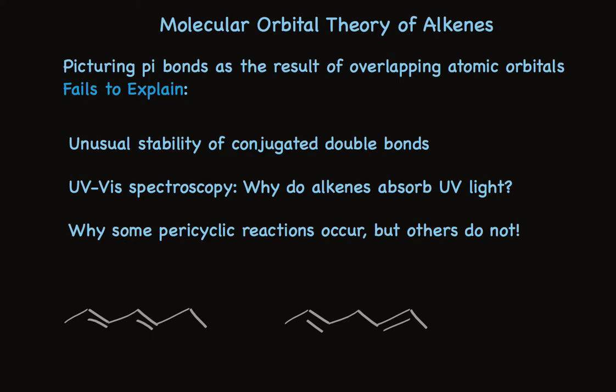And thirdly, there are some reactions called pericyclic reactions that turn out to be cyclic additions between two alkenes. Some occur and others don't. They look extremely similar. Very difficult to guess why some would occur and others not using our current atomic orbital overlap theory. But molecular orbital theory lets us easily decide why some work and others don't.